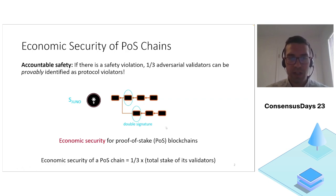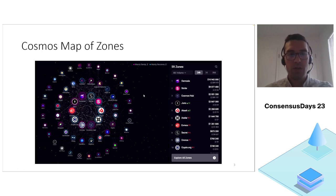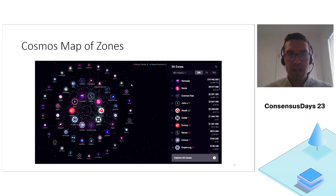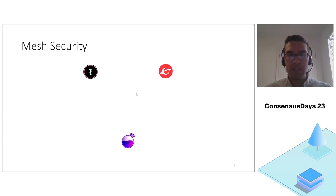Luckily no proof of stake blockchain is an island; they instead live in an ecosystem of other proof of stake chains. One such prominent ecosystem is Cosmos, which consists of application-specific blockchains. This architecture prompts the question whether these PoS chains can borrow security from other existing proof of stake chains, and this idea has led to the concept of mesh security.